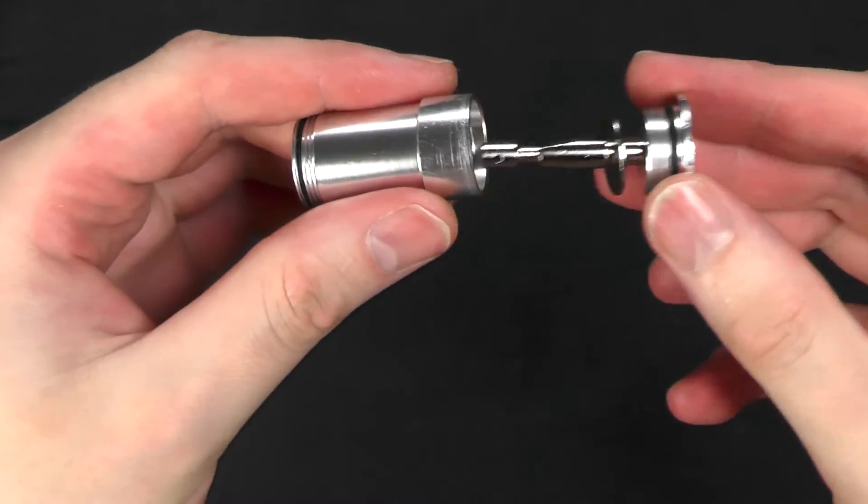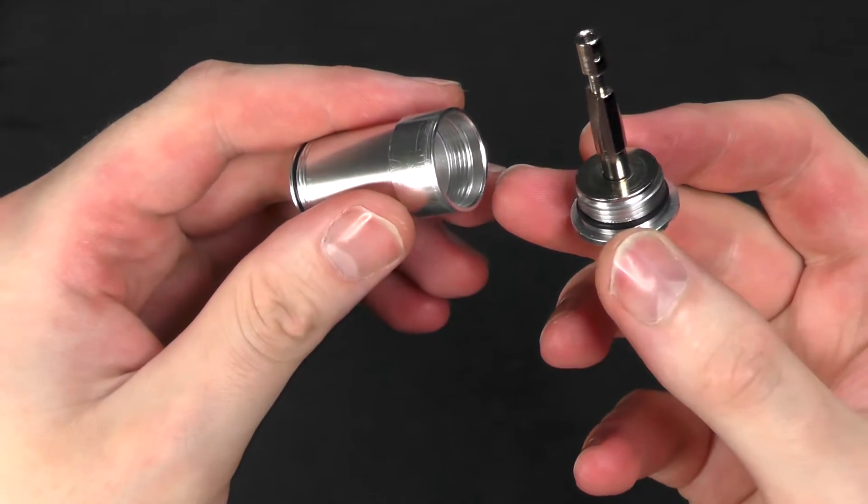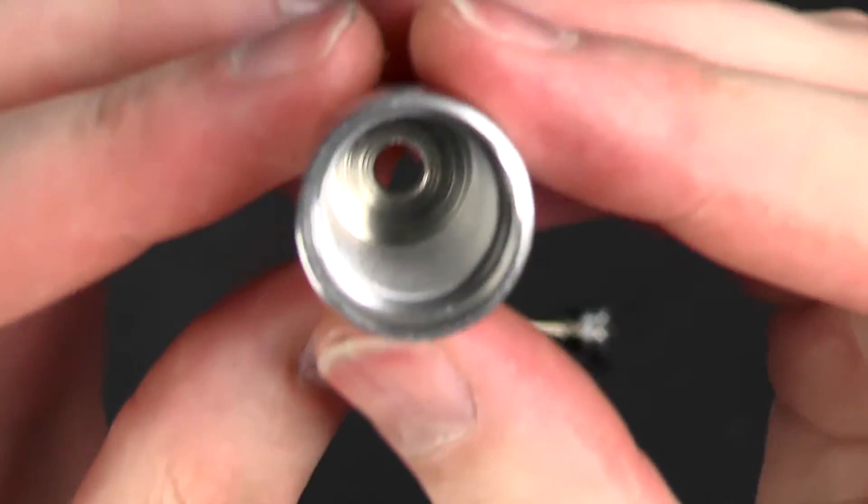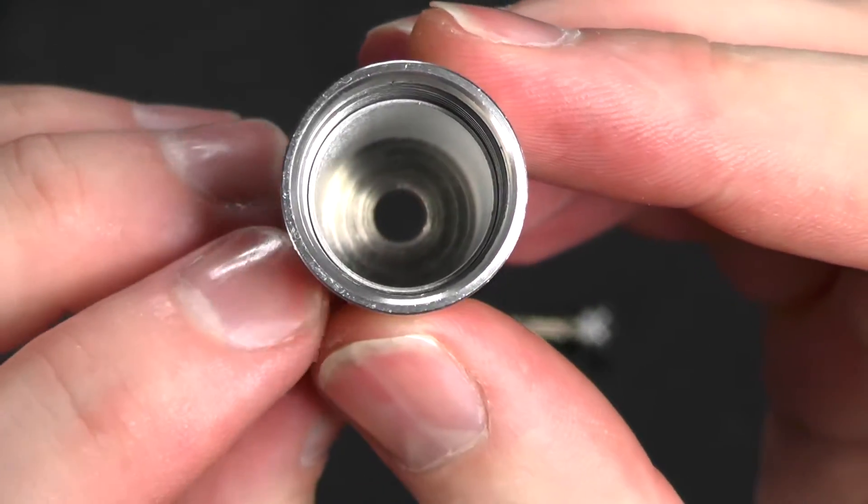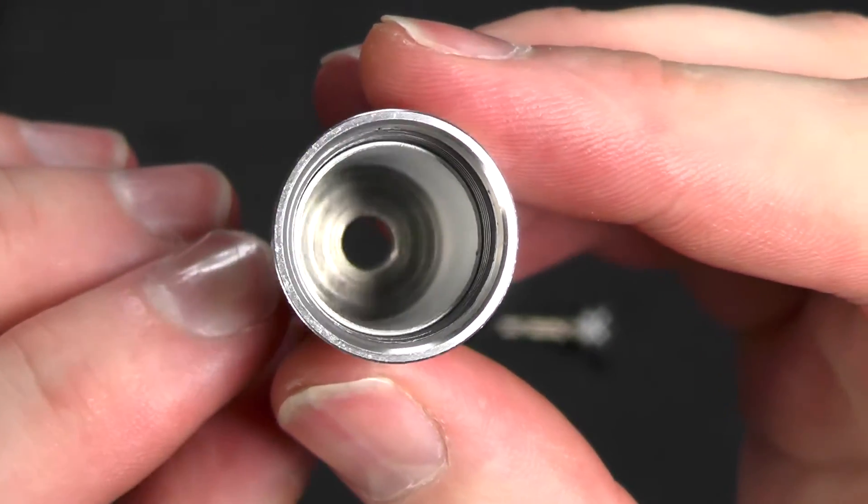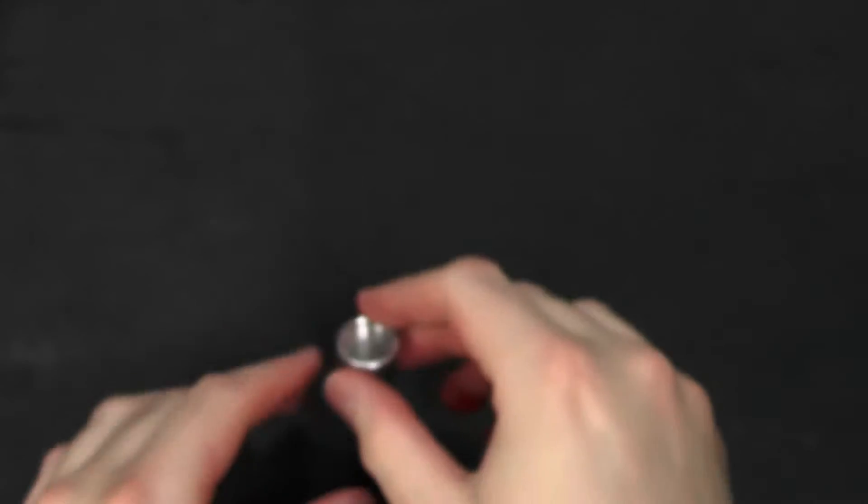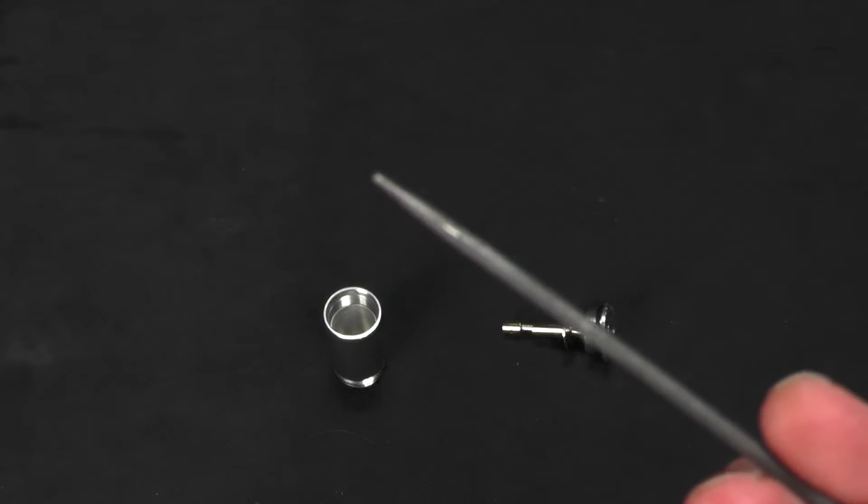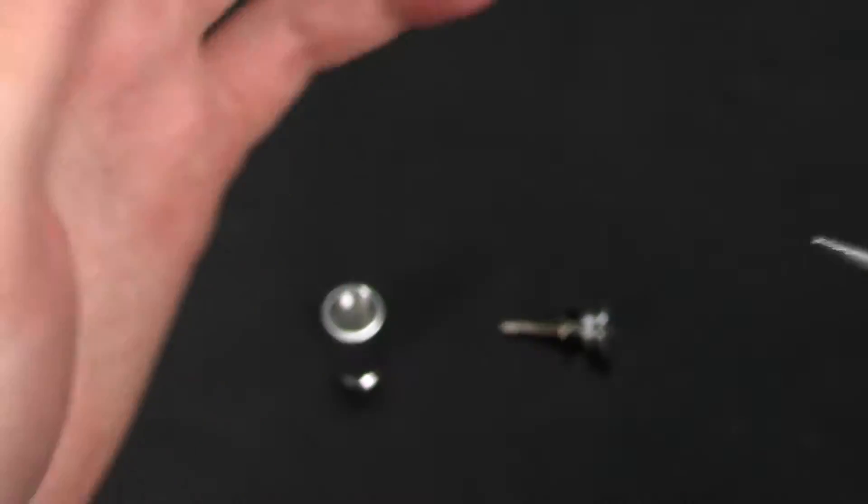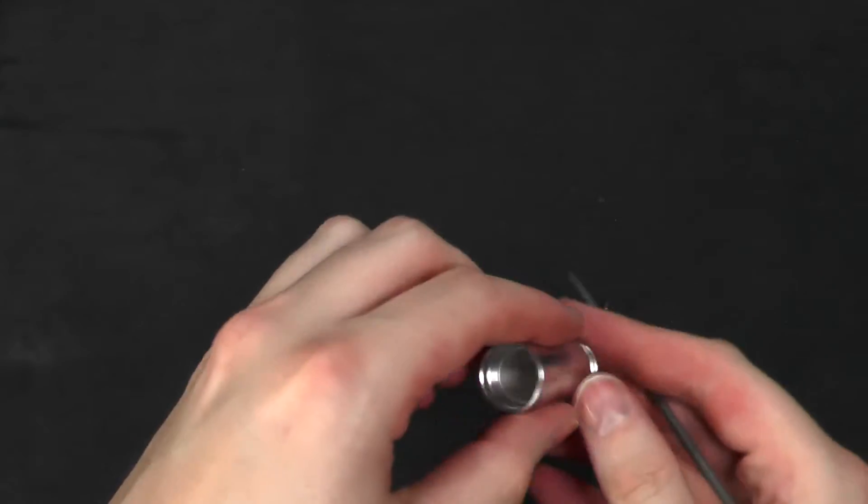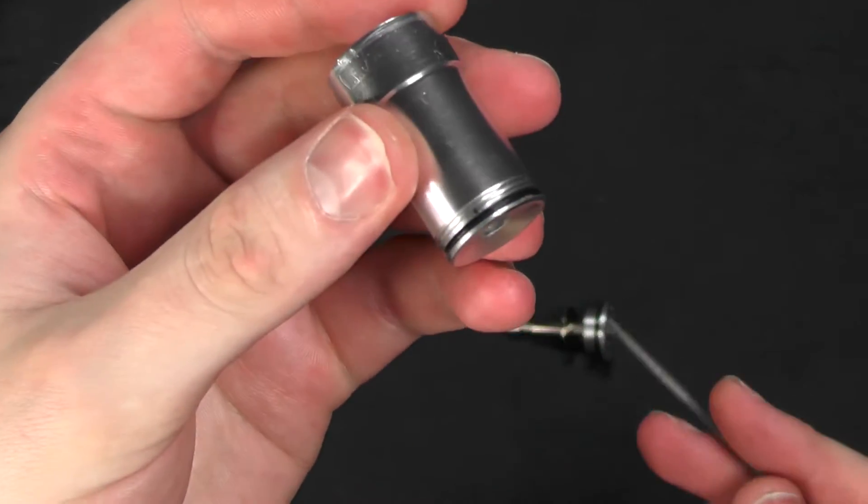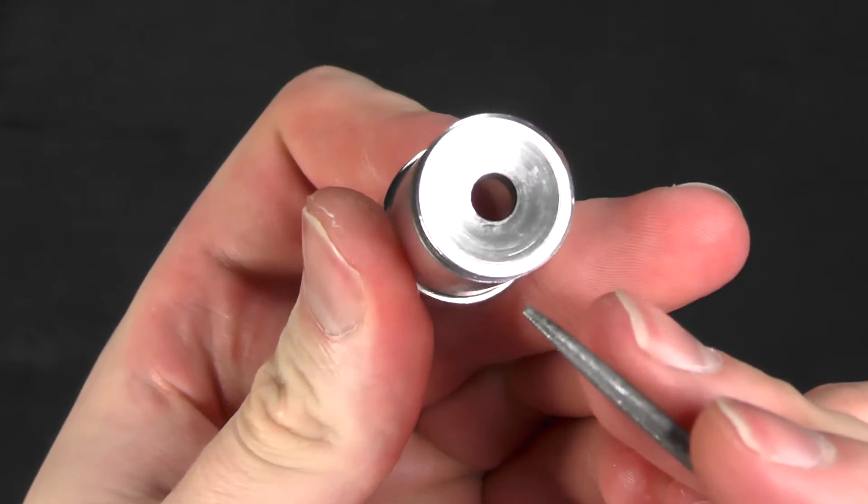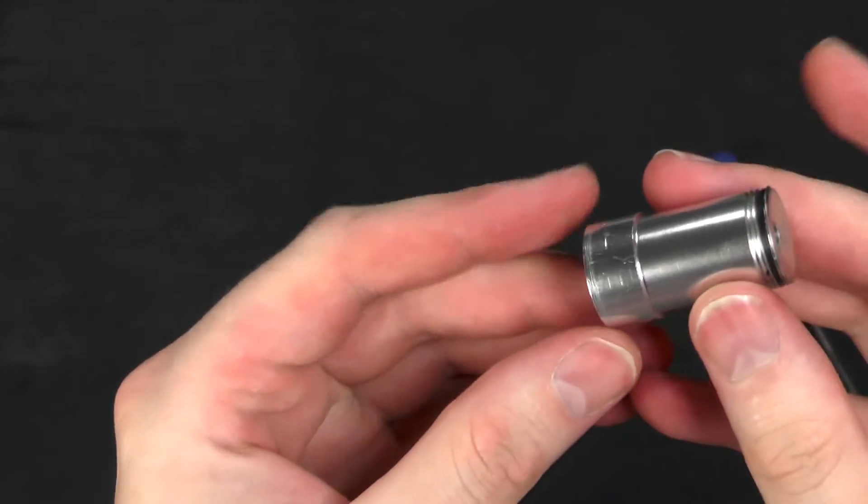The valve stem may or may not come out with it. And what's left inside is a spacing washer and an o-ring at the bottom. So I'll use a pointy file. You want to be careful here not to actually mark the finish or the machining, because this is all very precise.